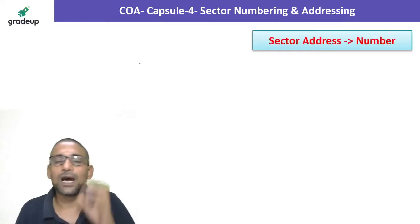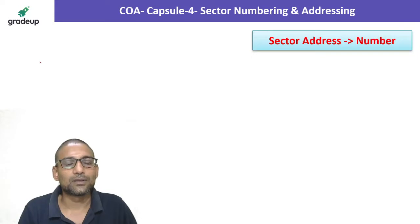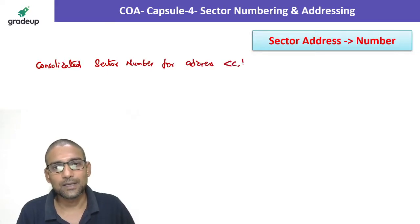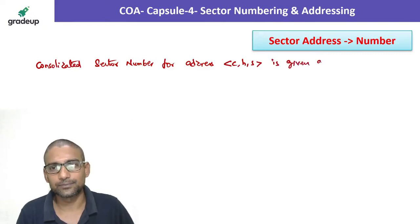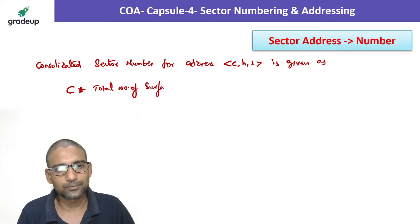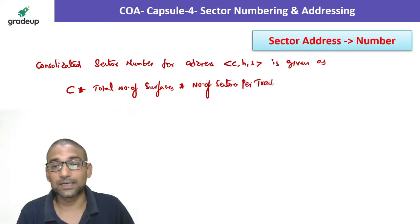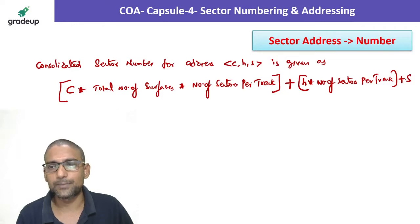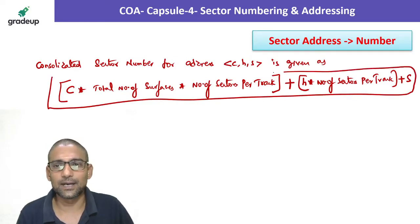Now, if address is given, how do you get the number? The consolidated sector number for address CHS is always given as C into total number of surfaces into total number of sectors per track plus H into number of sectors per track plus S. This is the formula to calculate the sector number for given CHS.